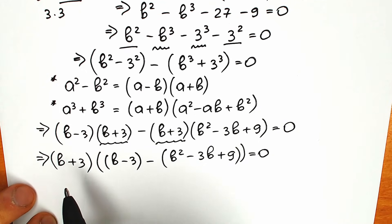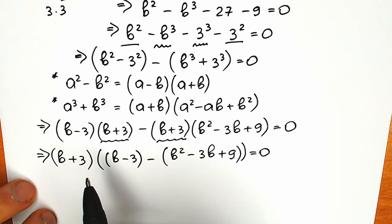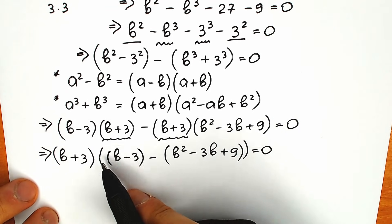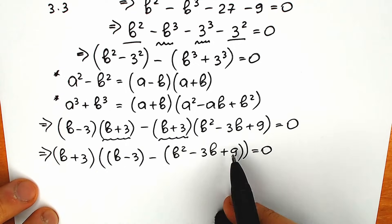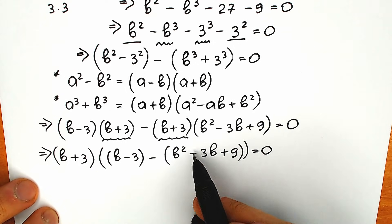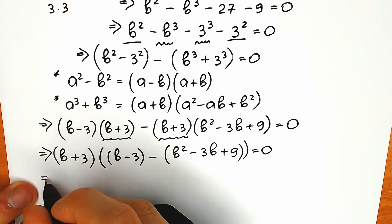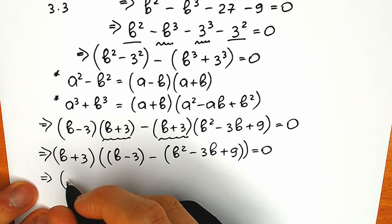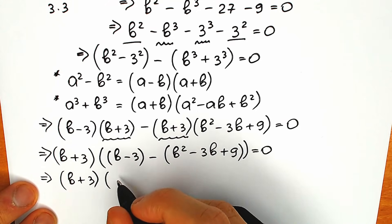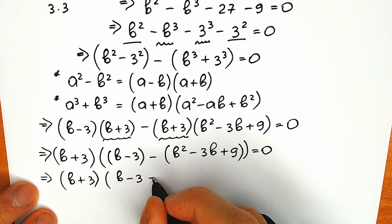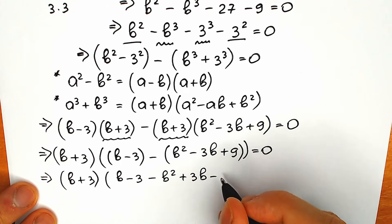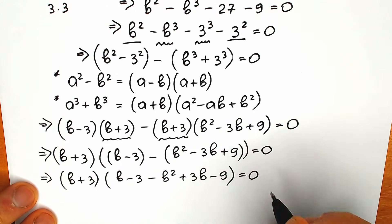Here (b plus 3) we can't simplify further — it's a very basic expression. For the second parenthesis, we can actually remove the inner parenthesis since we have a negative sign, but we need to change all the signs to the opposite. So we have (b plus 3) times (b minus 3 minus b squared plus 3b minus 9) equal to 0.